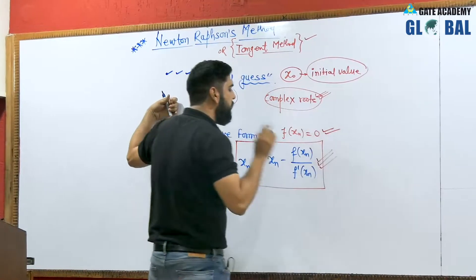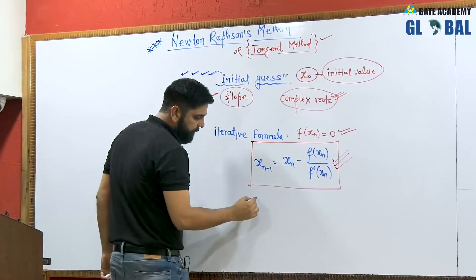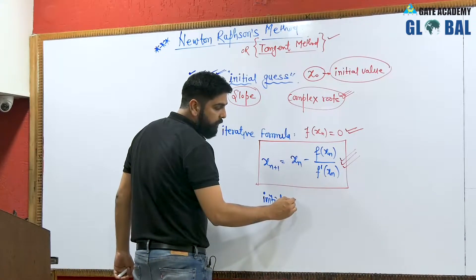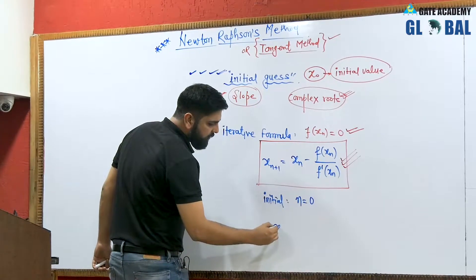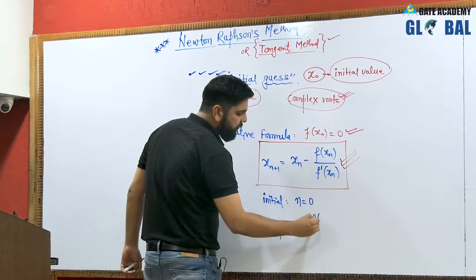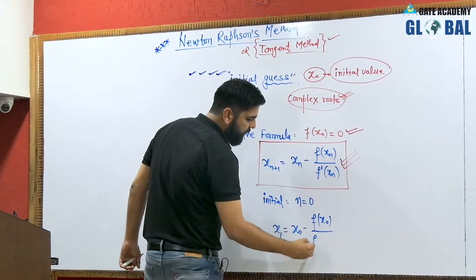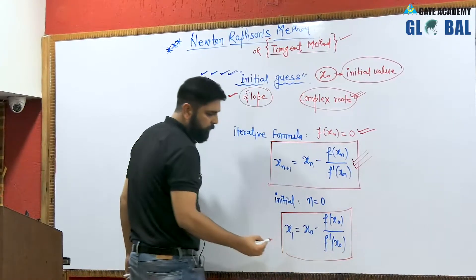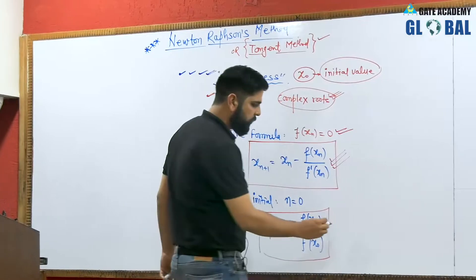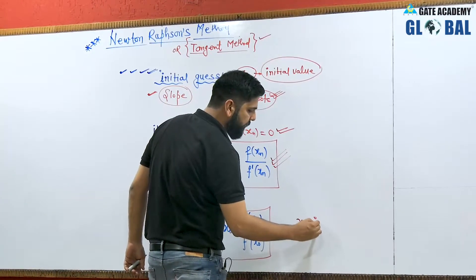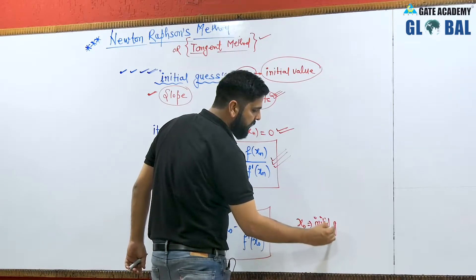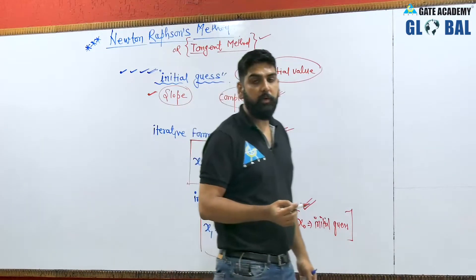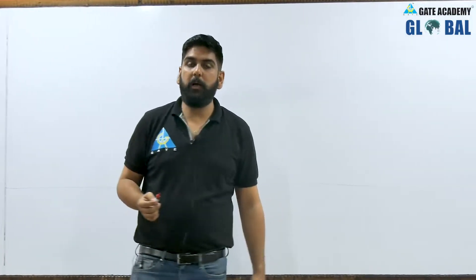This formula is for the equation f(x_n) = 0. The first iteration is formed by putting n = 0: x_1 = x_0 − f(x_0) / f'(x_0). Here x_0 is the initial guess, which must be given because the Newton-Raphson method is really sensitive about it.